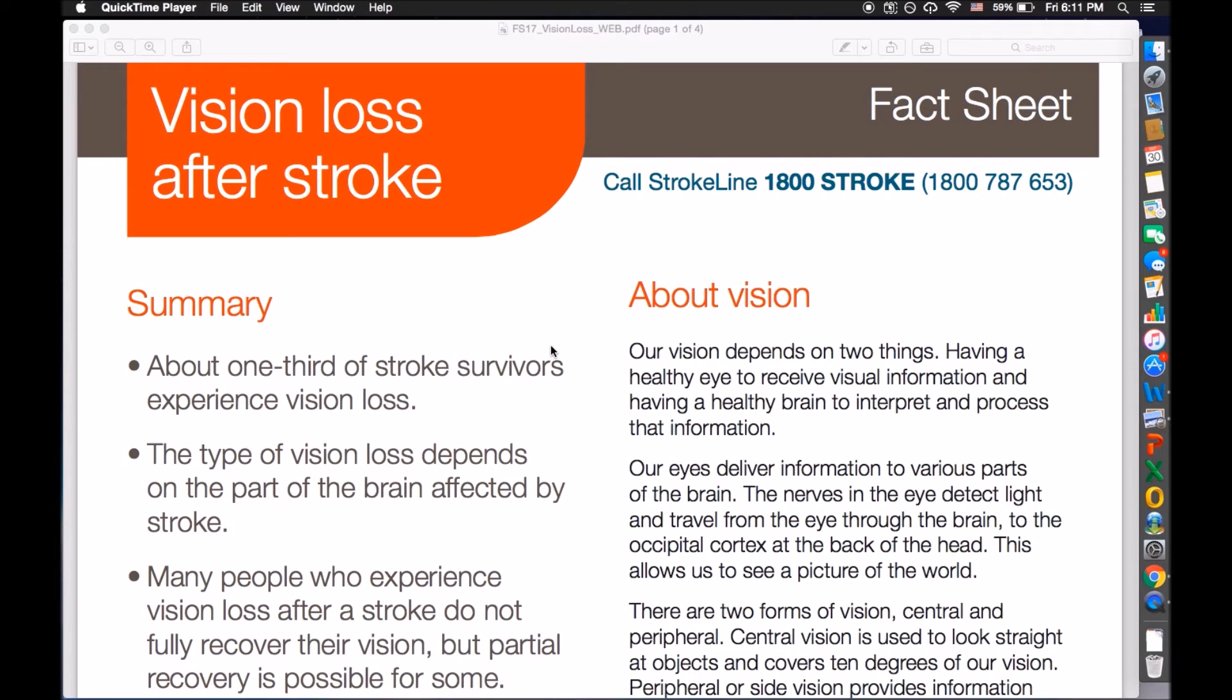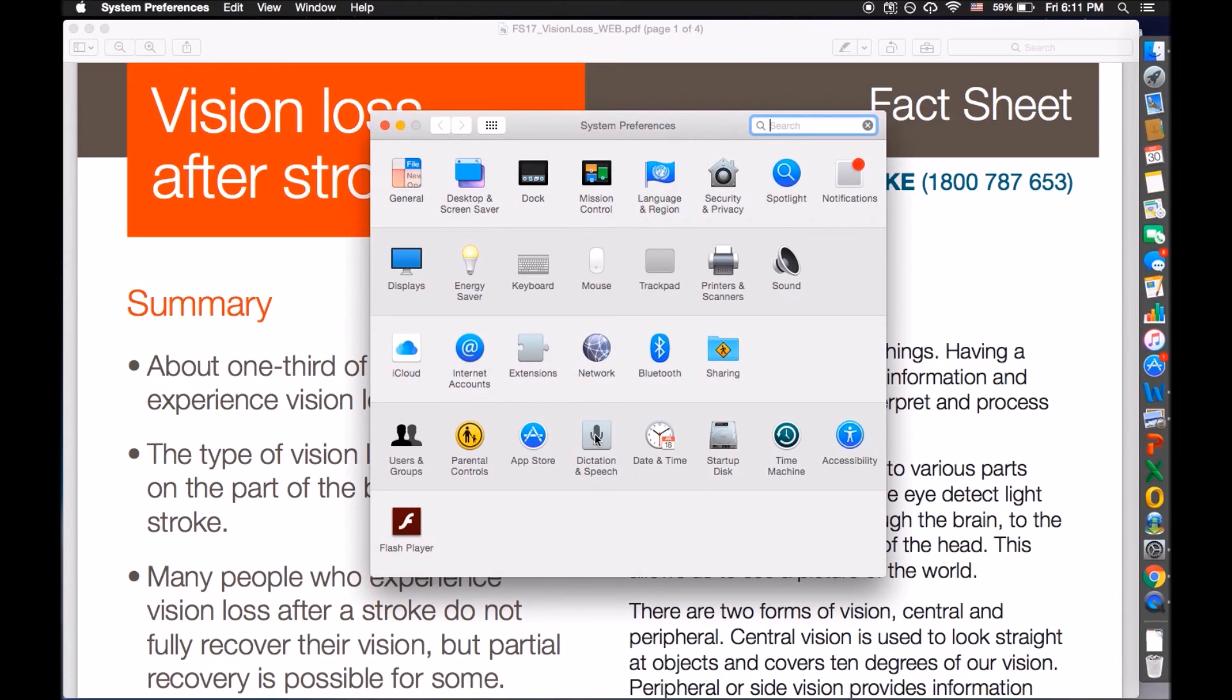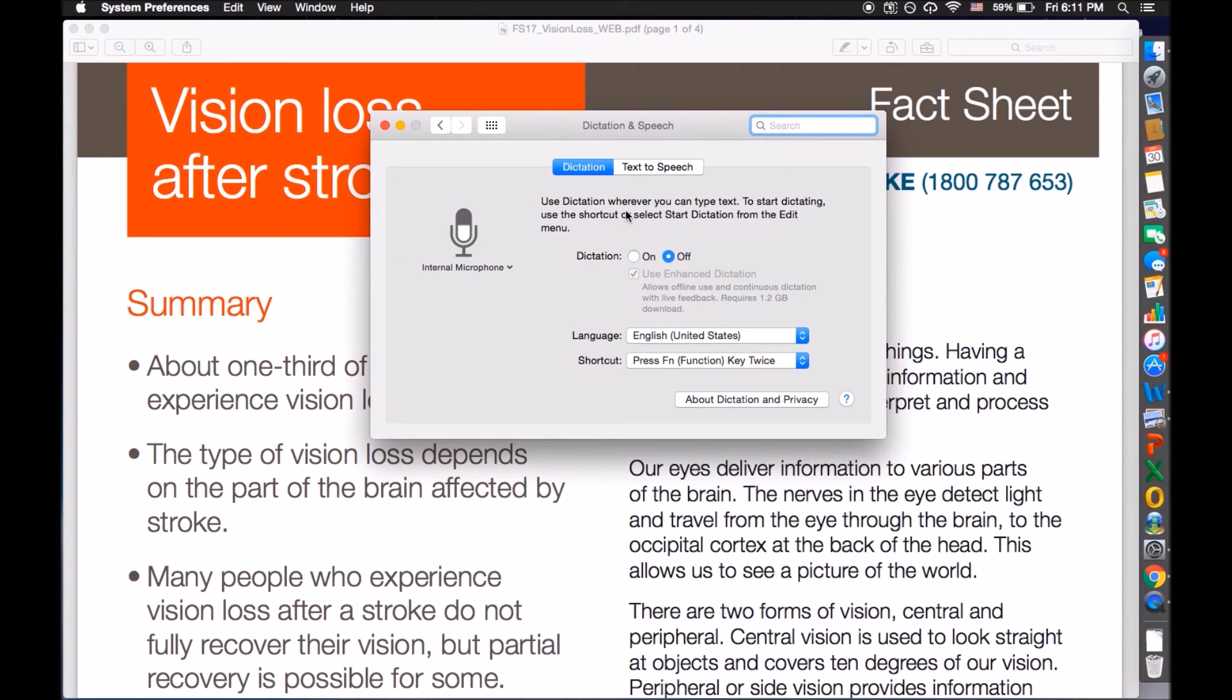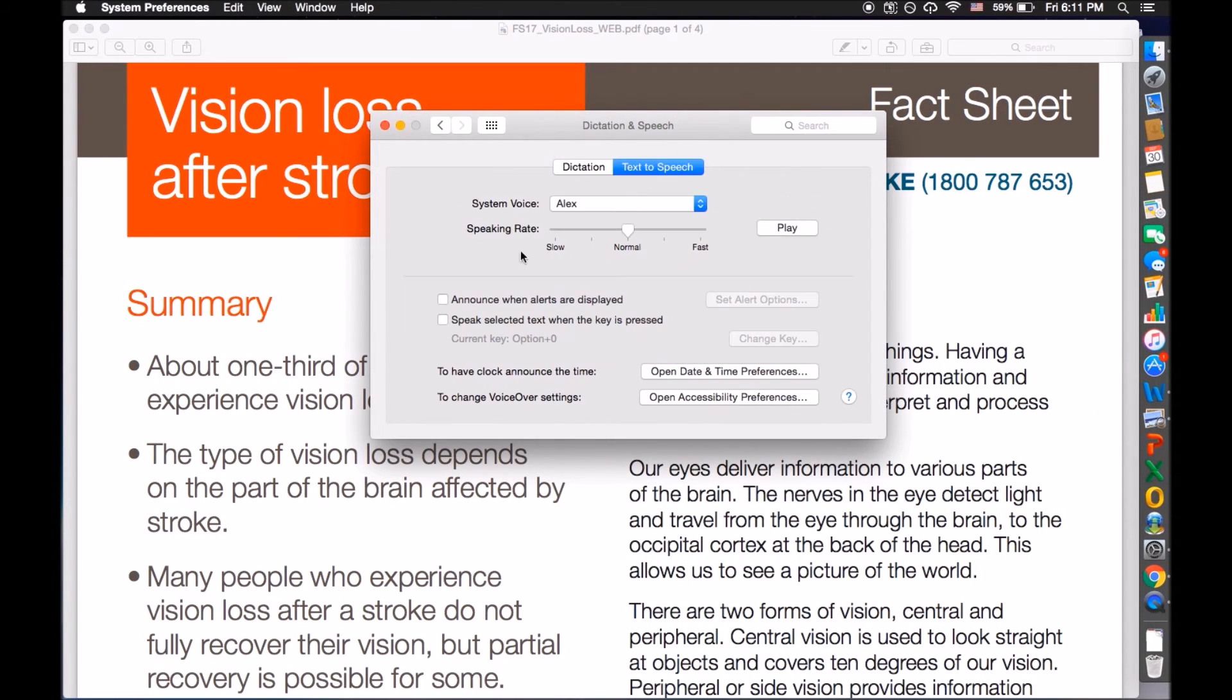To turn on text-to-speech, go to System Preferences, then Dictation and Speech, then Text-to-Speech. Check the box next to Speak Selected Text when the key is pressed. Then select a shortcut that uses keys on the right side of the keyboard, like Option 0.